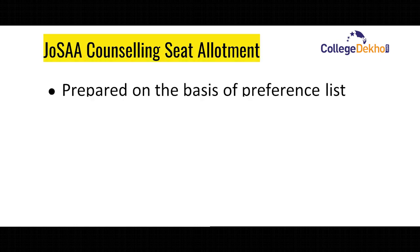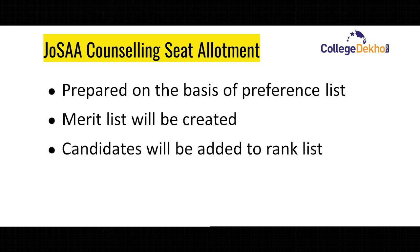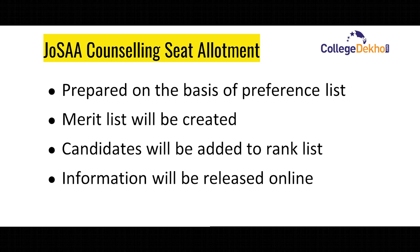Now let us look at the seat allotment process for JOSA counseling. JOSA allotment is conducted online on the basis of the preferences list submitted by students, and the merit list will be prepared by the conducting authority. Candidates who qualify the cutoff criteria set by JOSA will be added to the JOSA rank list. The rank list and seat allocation information will then be released online, showing seats allocated to candidates based on their rank and preferences filled through choice filling.